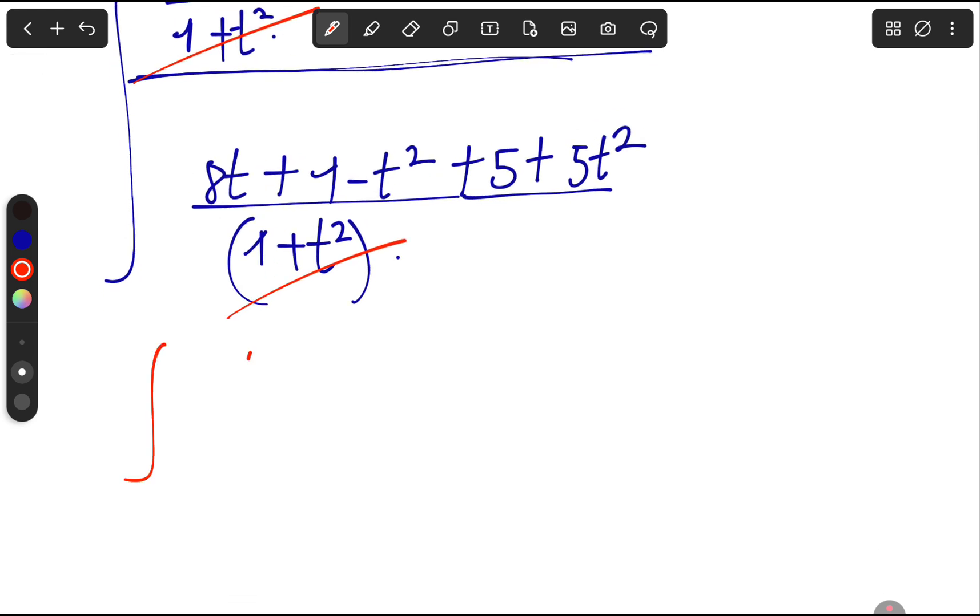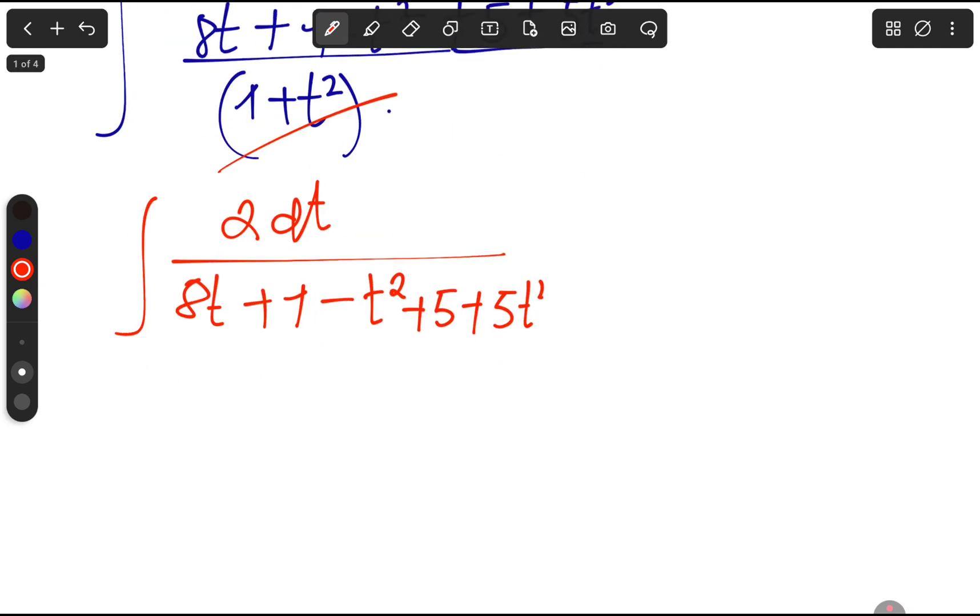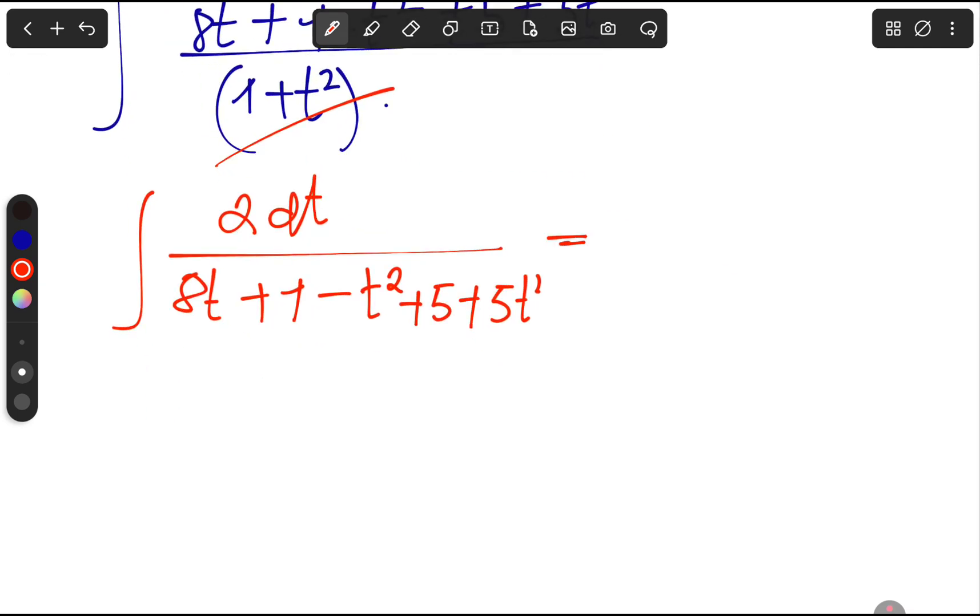So automatically, this one and this one cancels out. What do we mean with? We will mean with the integral of 2dt over 8t plus 1 minus t squared plus 5 plus 5t squared.